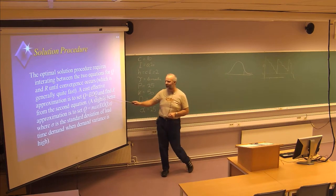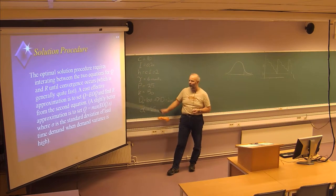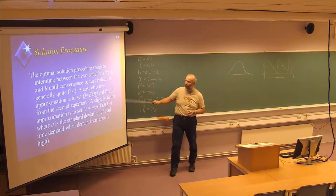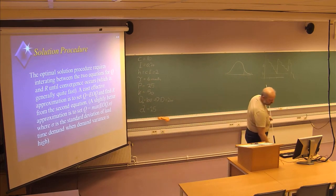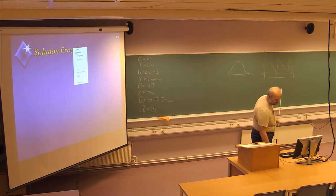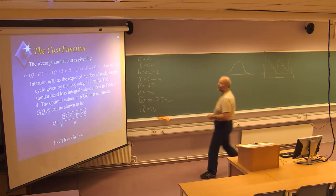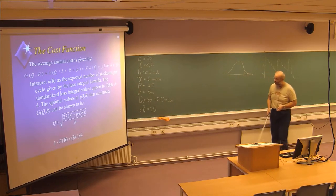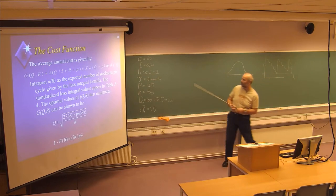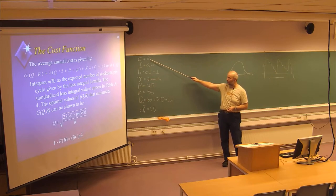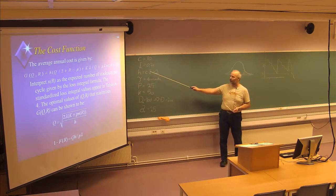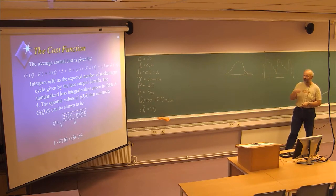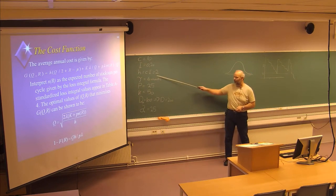We started on an example last week. The values from the textbook example are: the product value is 10, the interest rate is 20% annually, so the holding cost H = 10 × 0.20 = 2 per unit per year. The lead time tau is 6 months, which is quite high — perhaps shipping from China by boat. The penalty P is 25, the ordering cost K is 50, and the demand in the lead time is 100.